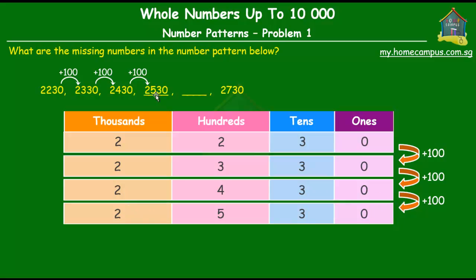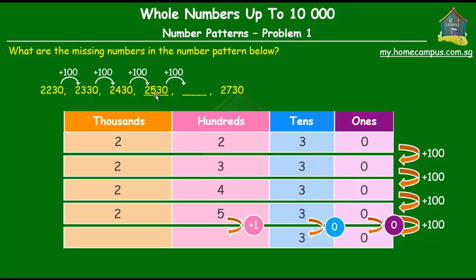And the second missing number is also plus 100 more than the previous one. So that would be 2630. The only digit that changes is the hundreds digit, the hundreds place digit, the five. We add one to that and we get six. Rest all the digits are the same.